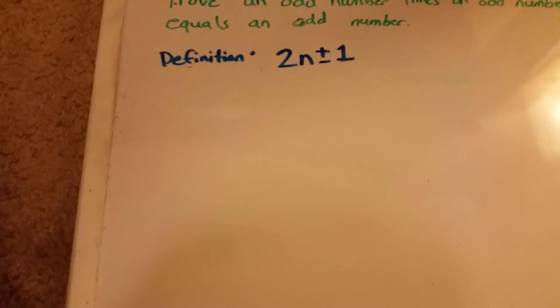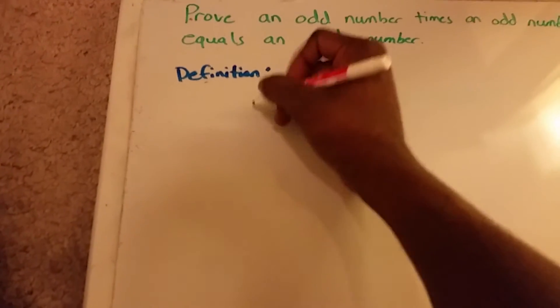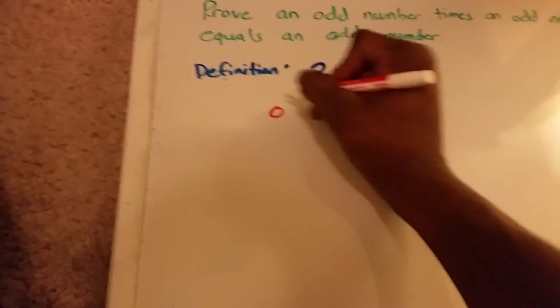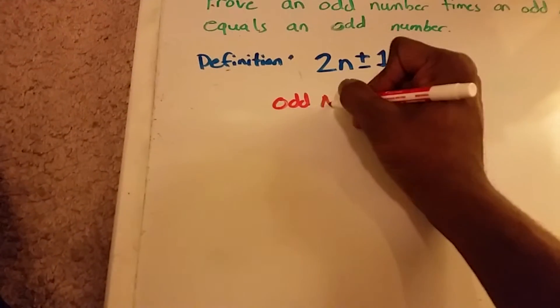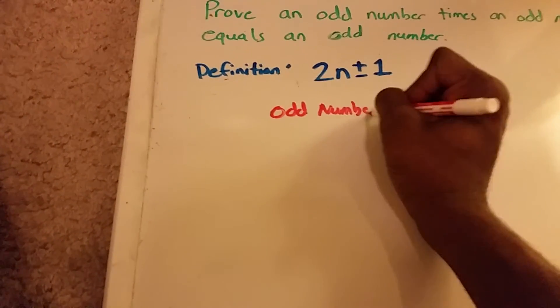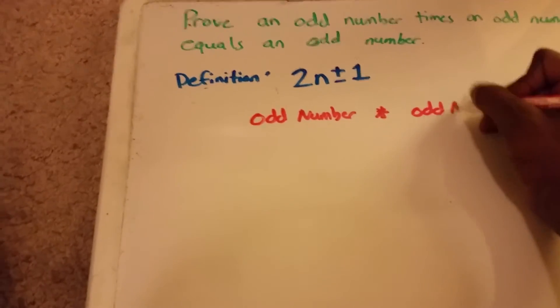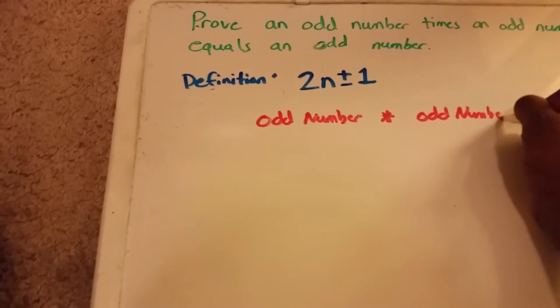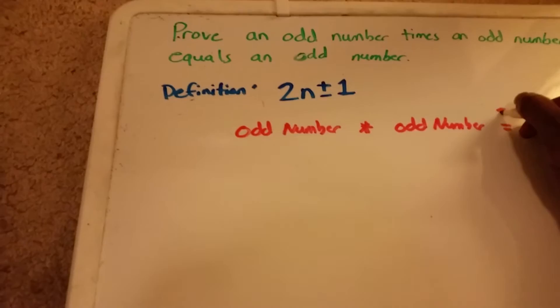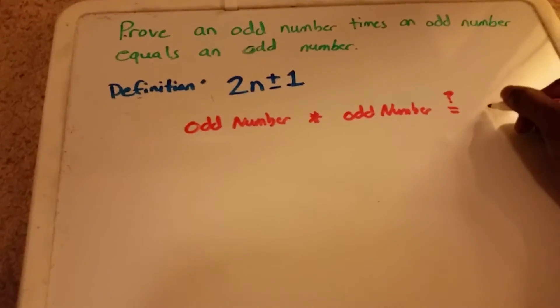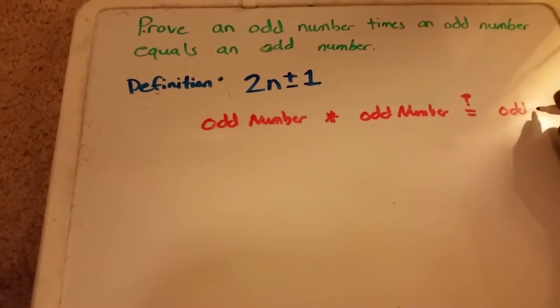We have to prove it. So using the definition, what we want to do is we want to multiply an odd number, and we want to multiply that times some other odd number. And the result that we want to get, that we're not sure if it's true or not, is another odd number.